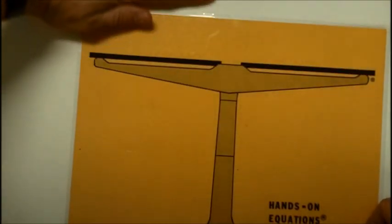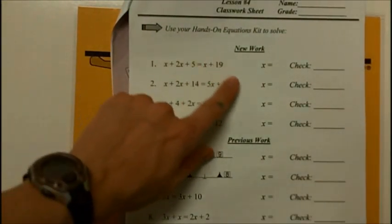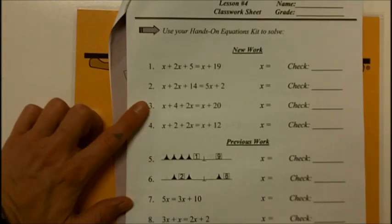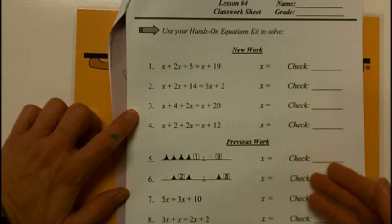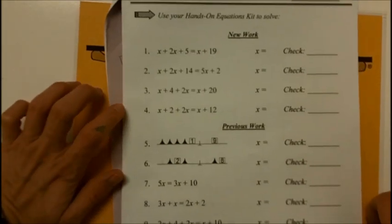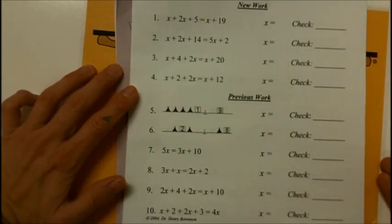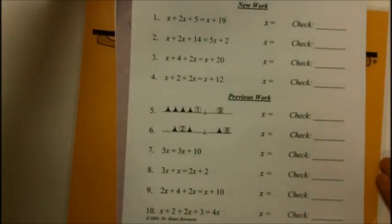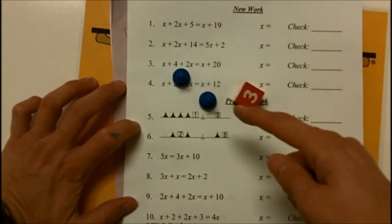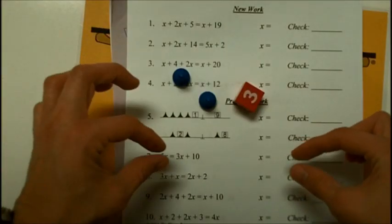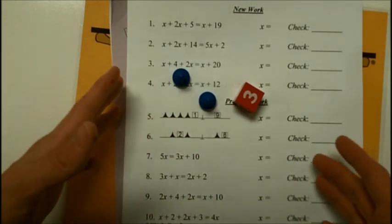So as you get ready to complete worksheet number 4, lesson number 4, on these problems, please practice using both kinds of legal moves, using the taking away pawns and taking away values that are equal. Here you will use any of those methods as you do the previous work. But every time, it's important to me that you use the pawns and the cubes. Don't try to just do it in your head. Make sure you're using the pawns and the cubes. And make sure as you do your legal moves that you're removing the objects with two hands at the same time. Have fun on lesson 4.